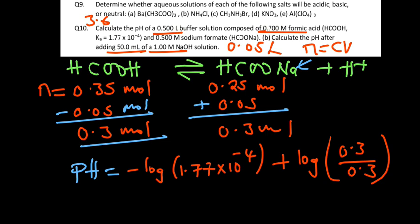Again, negative log of 1.77 times 10 to the power negative 4 equals 3.75, plus log of 1, so that equals 3.75. This is the new pH.